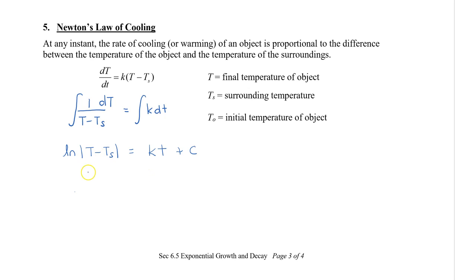I'm going to rewrite this formula in exponential form. Remember that natural log has a base of e. So we're going to say that e to the power of kt plus c is equal to T minus Ts. I'm going to actually ignore the absolute values. It doesn't actually matter in this case here.